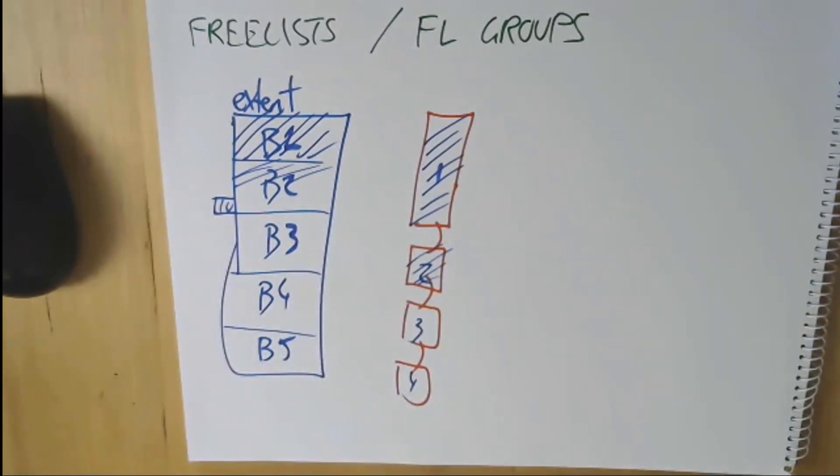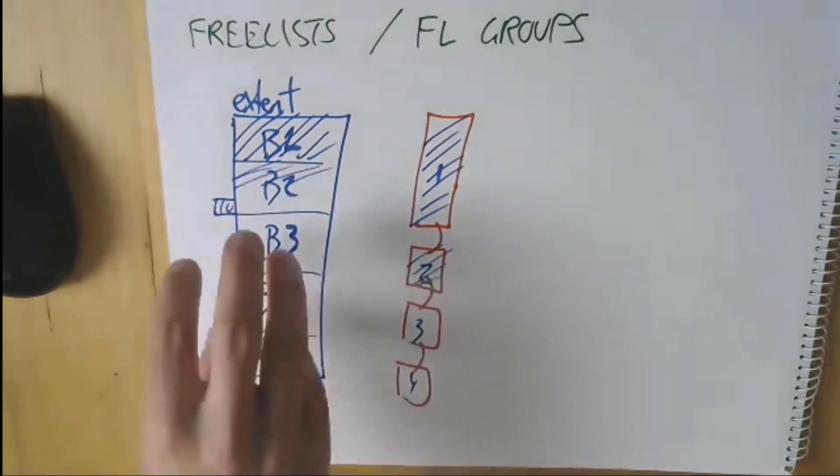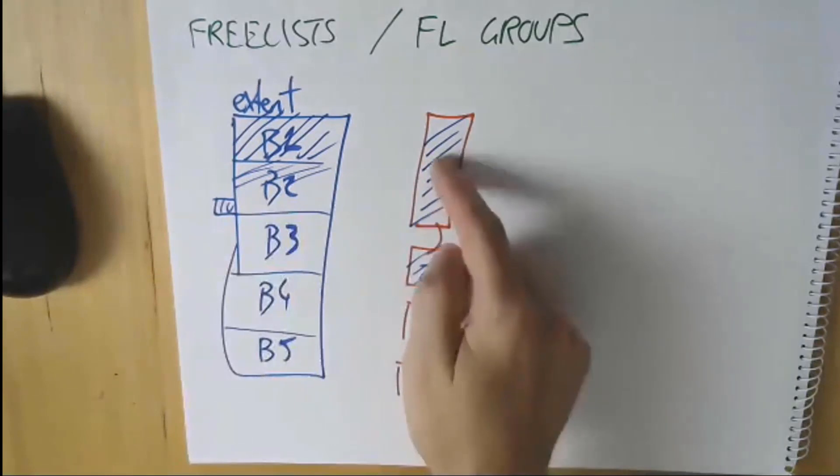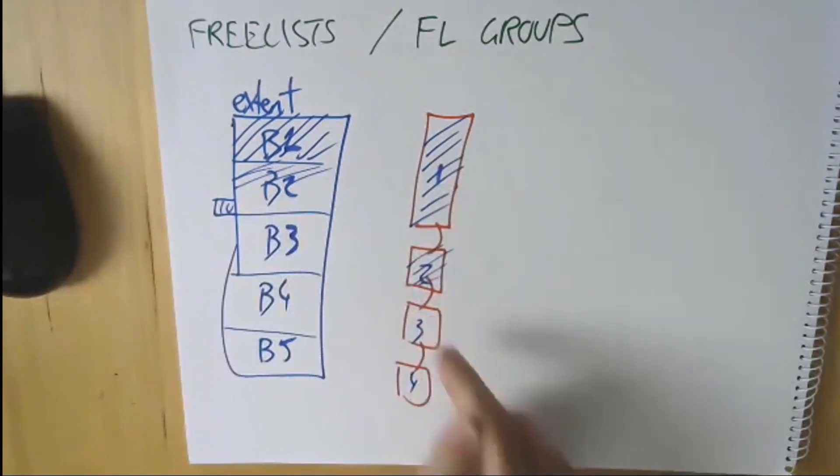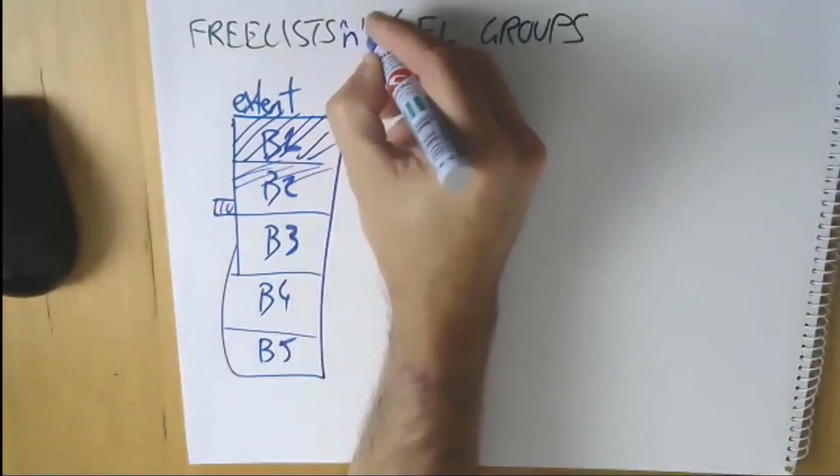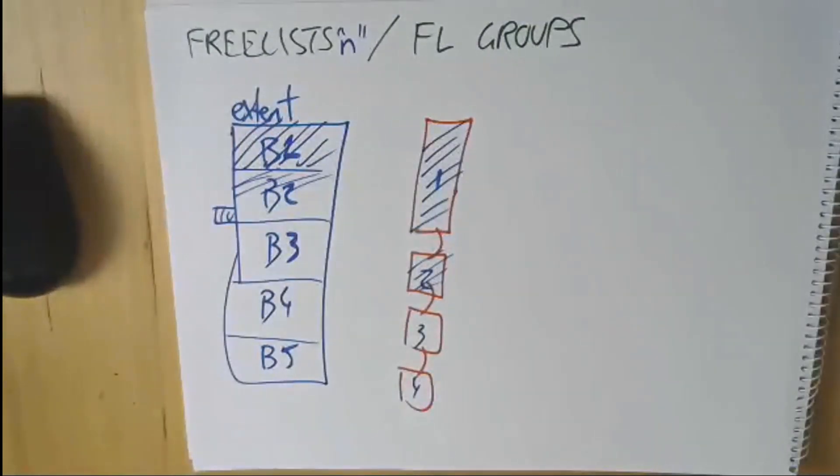The freelist was just a way of managing what blocks were free initially and what blocks became free as you deleted data from them. As you can imagine, if you've got lots of people inserting lots of data all the time, now you have contention for these things because you've got lots of people trying to put things on or take things off the freelist.